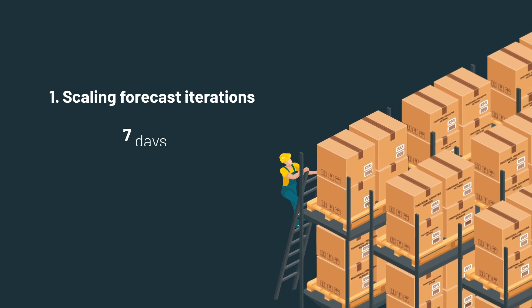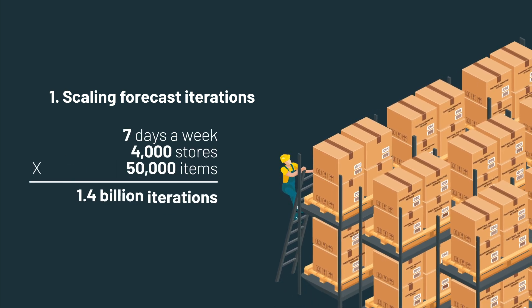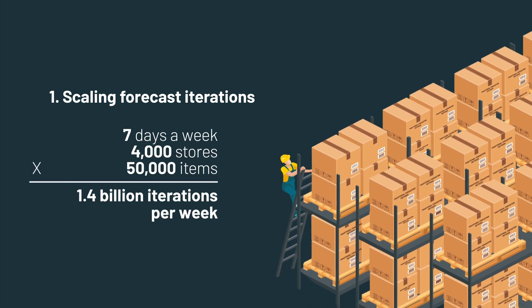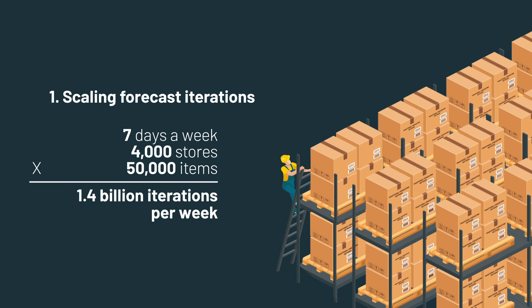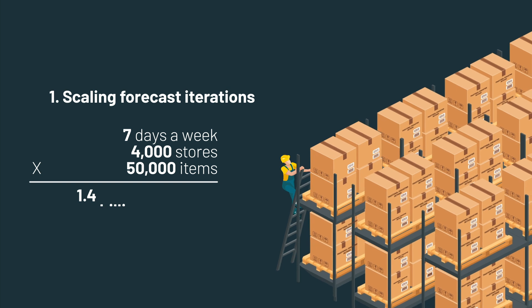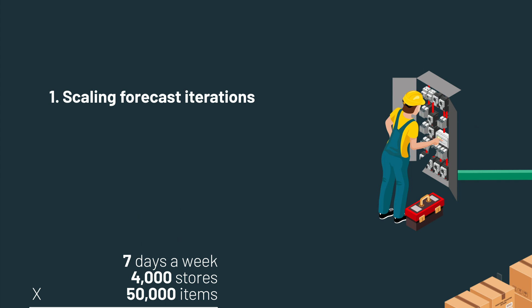At a day, store, and item level, that's now 1.4 billion iterations of that forecasting model every week, or 200 million iterations per day.